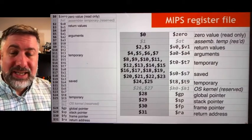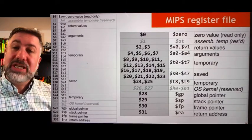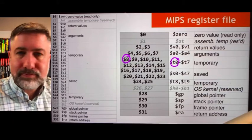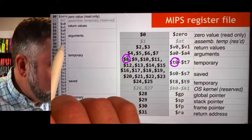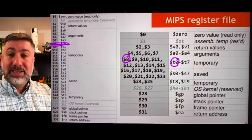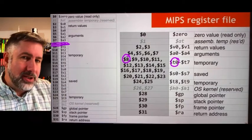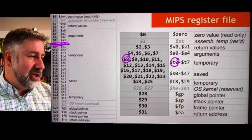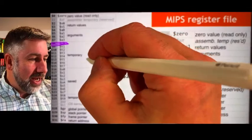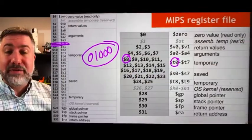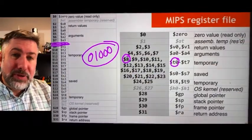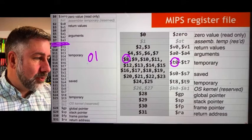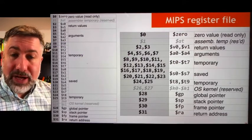The important thing to know is that if I ask which register T0 is, you look at the table and see T0 is register eight. So if I ask for the register address for T0 in an instruction, you say it's eight, and remember that eight in binary is 01000 — those are the five bits that tell the computer it wants T0 in the next instruction. That's the register file for MIPS.